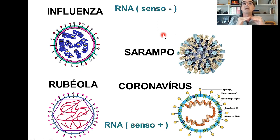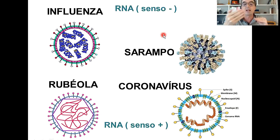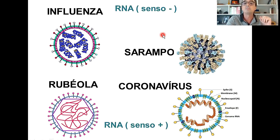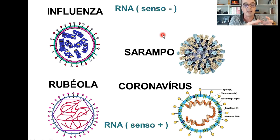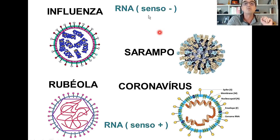O que significa um vírus de senso negativo? É um RNA complementar ao RNA mensageiro. Ele precisa então gerar uma cópia complementar a ele, que seria um RNA positivo mensageiro, para então ser traduzido em proteína. Há outros tipos ainda de vírus de RNA que vamos deixar para explicação em outro momento. No nosso próximo vídeo falaremos da síntese das proteínas a partir do RNA mensageiro, e o Agnaldo estará junto comigo e vai falar sobre a importância das proteínas, dos vírus e das células para a entrada das partículas virais no hospedeiro.